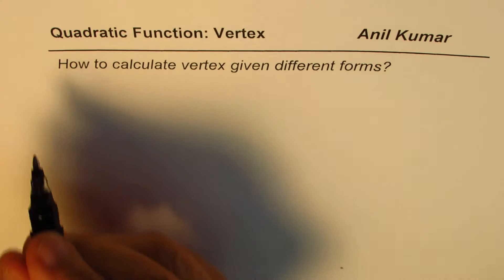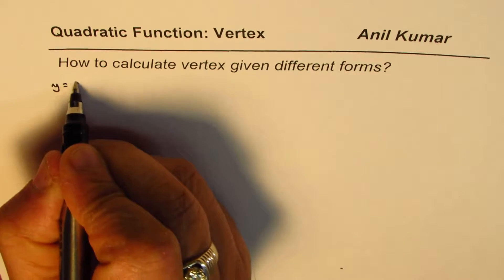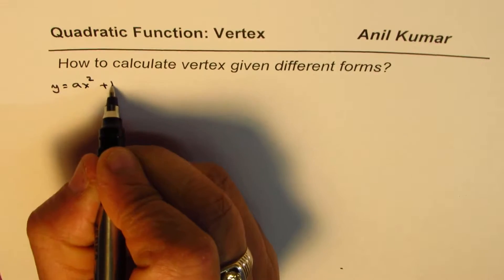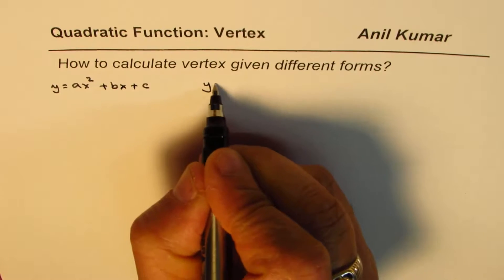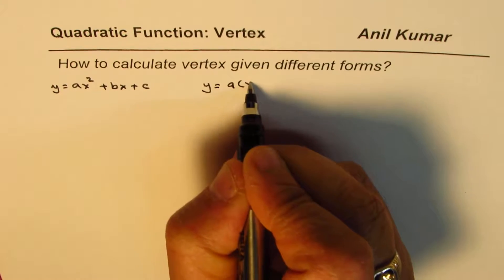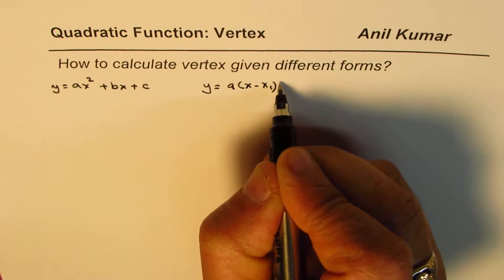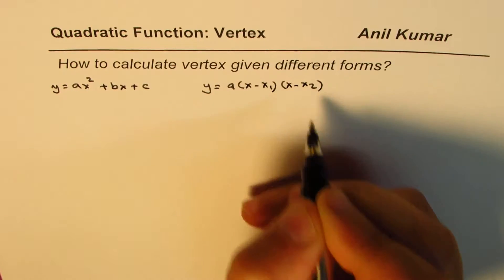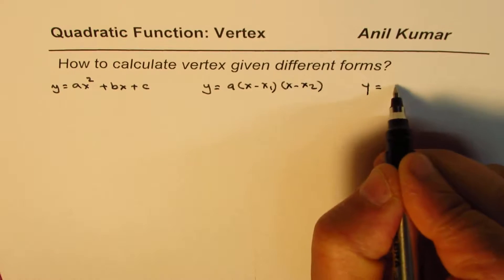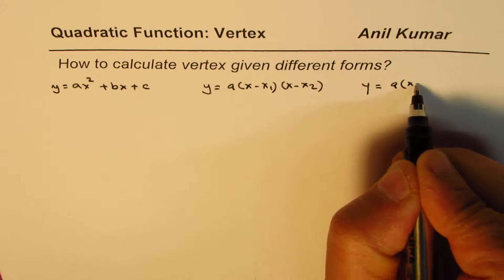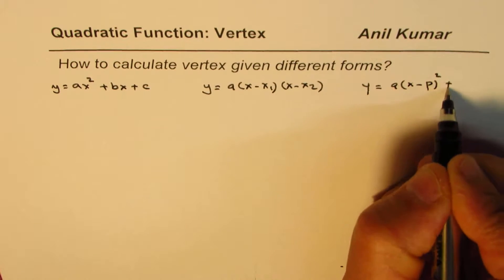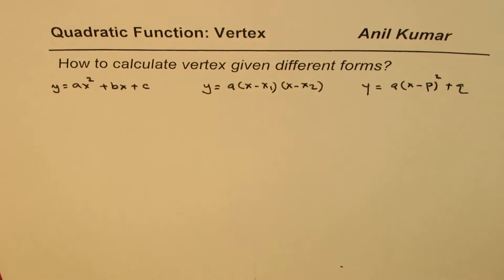One of them is called the standard form which is y equals ax squared plus bx plus c. We could have the factored form which is y equals a times (x minus x1) times (x minus x2), or we could have vertex form which is y equals a(x minus p)² plus q. So these are three different forms.